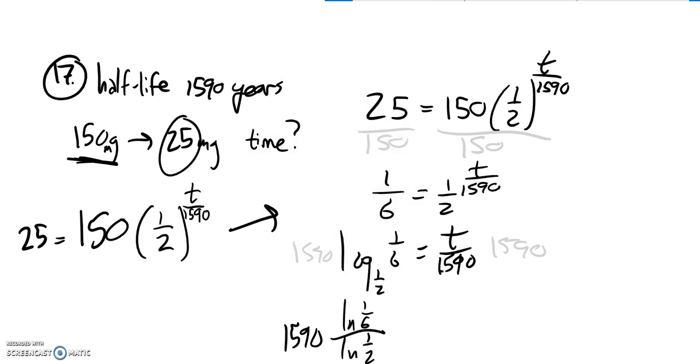So I have 1590 times that. That will give me my time. If I do that, I'm going to put that in my calculator, and I get about 4110 years. It's a long time.